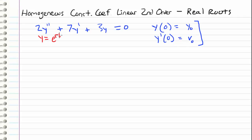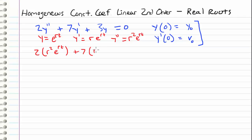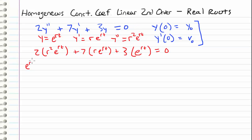Let's go ahead and assume a solution of the form e to the r times t. This makes y prime equal to r·e^(rt) and y double prime equals r²·e^(rt). Plugging back in, we get 2r²·e^(rt) plus 7r·e^(rt) plus 3·e^(rt) equals 0. We factor out e^(rt). Since e^(rt) is always non-zero, we can divide both sides by it without eliminating any roots.